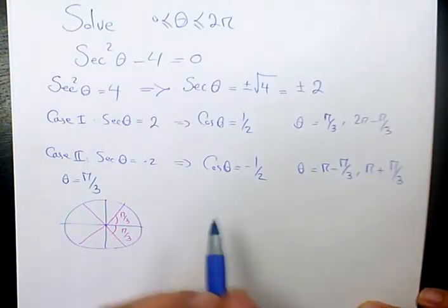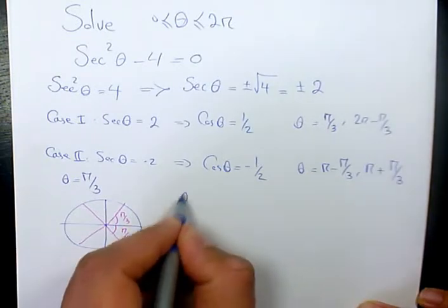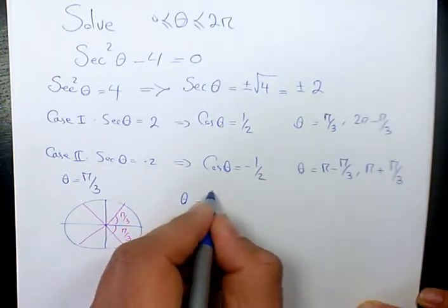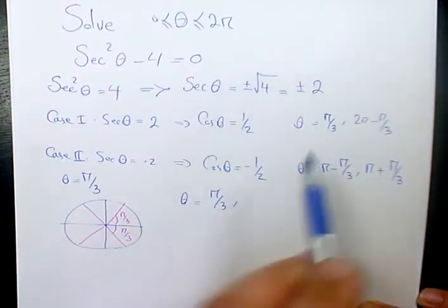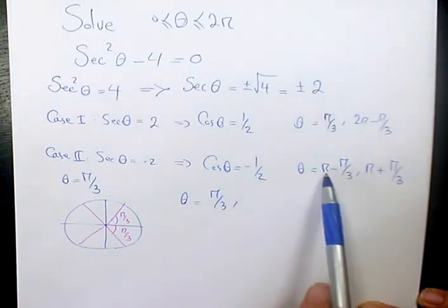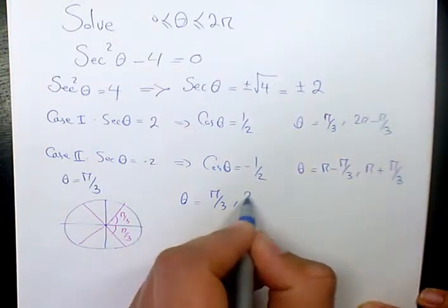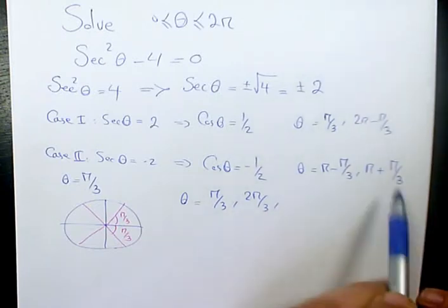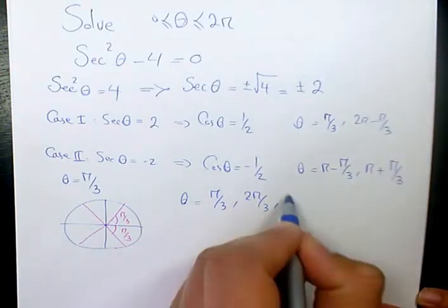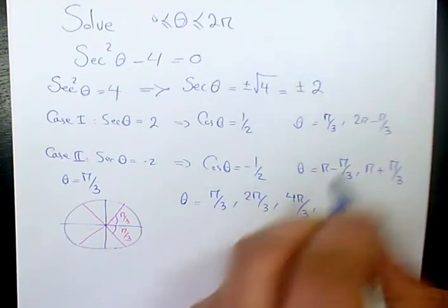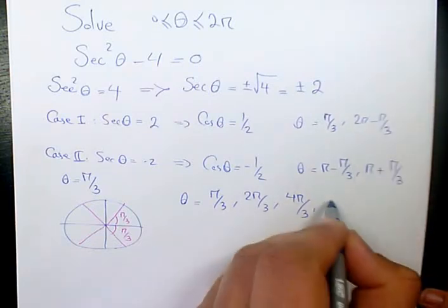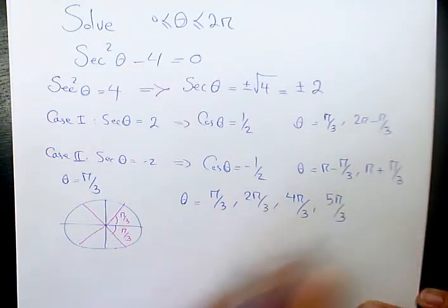So we have four answers. I'm going to write it in simplified form: pi over 3, and next one is pi minus pi over 3 which is 2 pi over 3. Next one is pi plus pi over 3, which is 4 pi over 3. And 2 pi minus pi over 3 is 5 pi over 3.